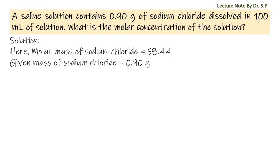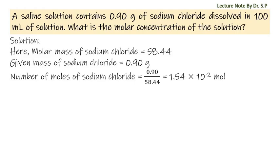Given mass of sodium chloride is 0.90 grams. Number of moles of sodium chloride equals 0.90 divided by 58.44, which equals 1.54 × 10^-2 moles.